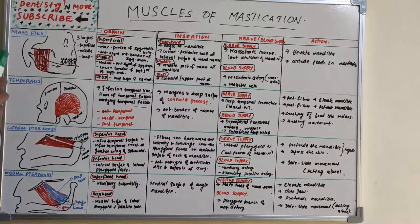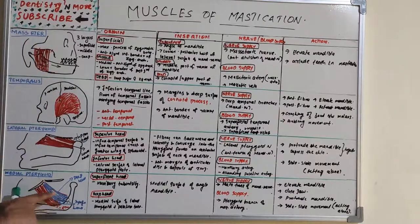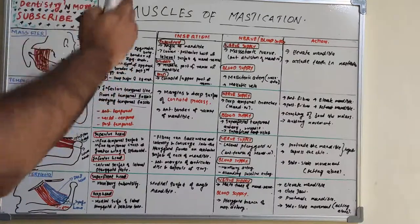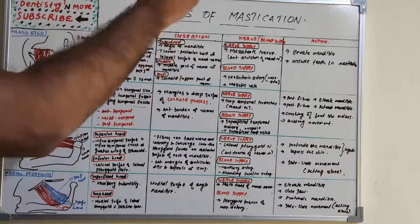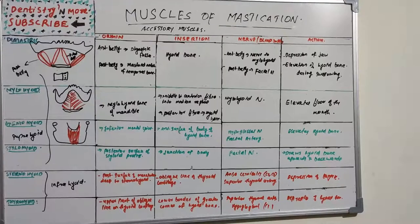To summarize the primary muscles: masseter is quadrilateral, temporalis is fan-shaped, medial pterygoid is rhomboid, and lateral pterygoid runs in a horizontal direction. All have been studied for their origin, insertion, nerve and blood supply, venous drainage, and action.